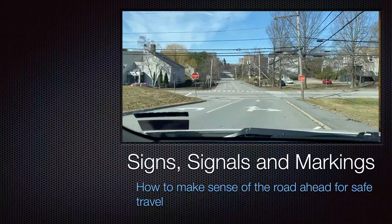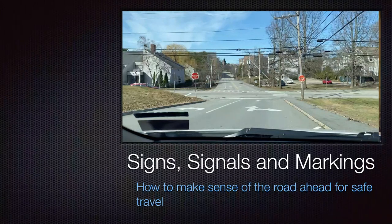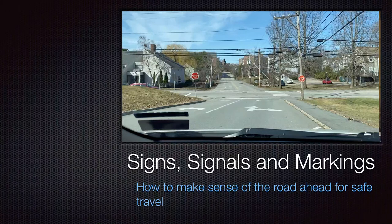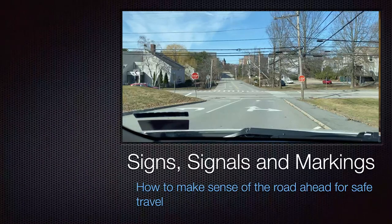Let's get right into tonight's class: Signs, Signals, and Pavement Markings — how to make sense of the road ahead for safe travel. This picture is in Durham, pretty close to the junior high. The reason I took this picture is we've got a couple things to pay attention to while driving. First, we're going to come upon an arrow — road markings. Second, we have a stop sign. We can turn right, go straight, or turn left.